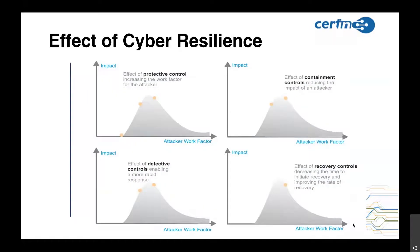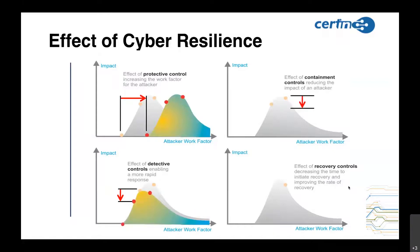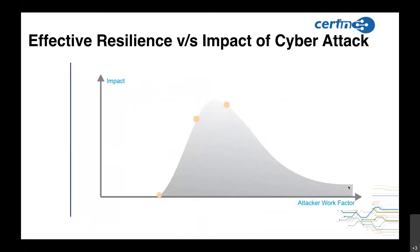There may be four different types of controls in the case of cyber resilience. The first is protective control — whatever system you have, you have designed protection initially, which will increase the work factor for the attacker, making it hard for them to enter your system. The second is detective controls — the attack is detected quite early, so there will be a rapid response. The third is containment control, which reduces the impact of the attacker. And the fourth is recovery control — recovery happens quite fast. If we apply all four techniques, the attack effect is quite less.